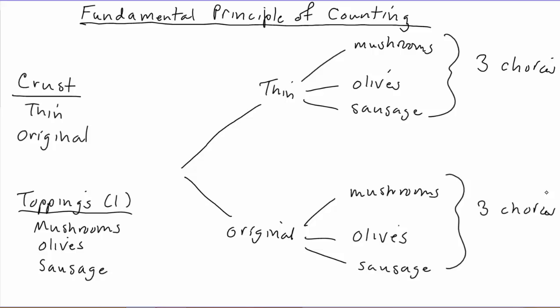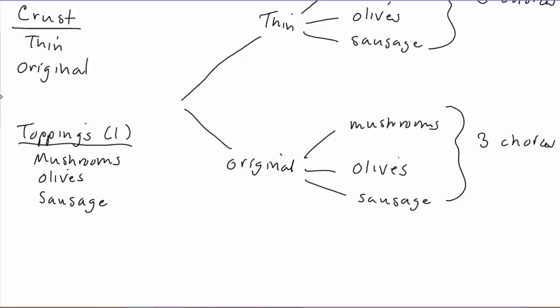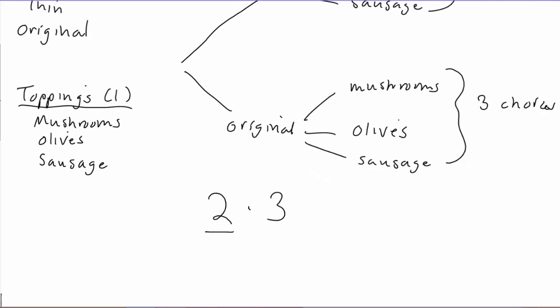How many total things do we have? Well, that should remind you of multiplication. You can take one of the numbers to be the number of groups — corresponding to thin and original crust — and the other number is the number of things in each group, in this case the number of toppings. When we multiply them together, we get six. So our six possibilities come from two times three: the two represents the different types of crust, and the three represents the different types of toppings.